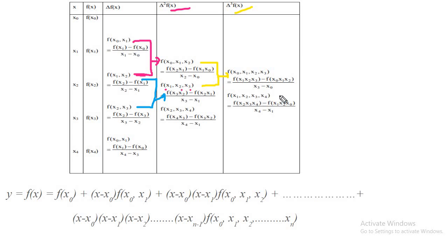When you have these higher-order divided differences, they form the coefficients of the polynomial. The polynomial looks like this: y = f(x) equals f(x0), plus (x minus x0) times f(x0, x1), plus (x minus x0)(x minus x1) times f(x0, x1, x2), and so on. If you have a given value, you can compute x minus x0, and use the operator f(x0, x1).